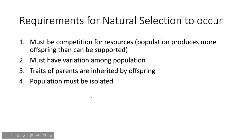Also, reproduction must be random. If you were observing a population, you wouldn't just be able to select the parents yourself — that wouldn't be natural selection, because you'd be choosing it yourself rather than nature doing the selecting.